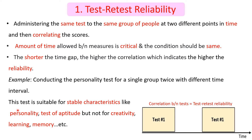Test-retest reliability is suitable particularly for stable characteristics like personality and tests of aptitude. However, it is not suitable for variables like creativity, learning, and memory, because these are dynamic characteristics or dynamic attributes.